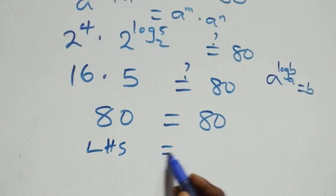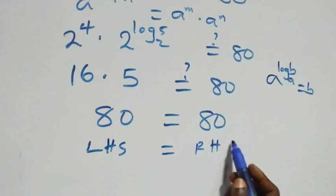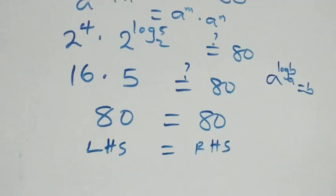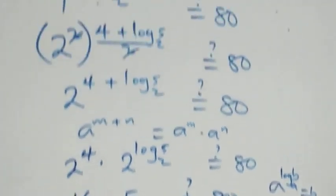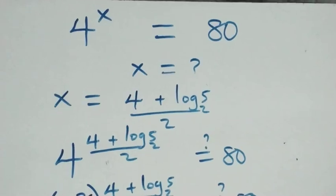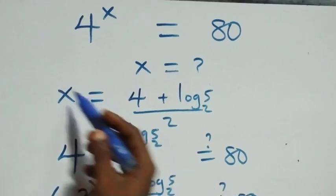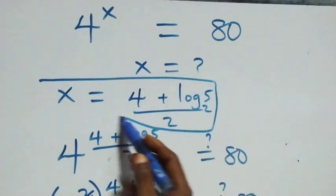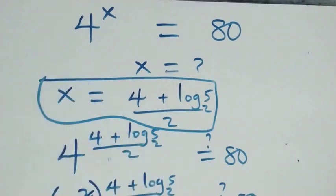Hence we conclude that x equals (four plus log five to base two) all over two satisfies this given problem. Thank you for watching — don't forget to subscribe for more videos, turn on the notification bell, share this video, give it a thumbs up, leave your comments, and join our membership package. See you in the next class, bye for now.